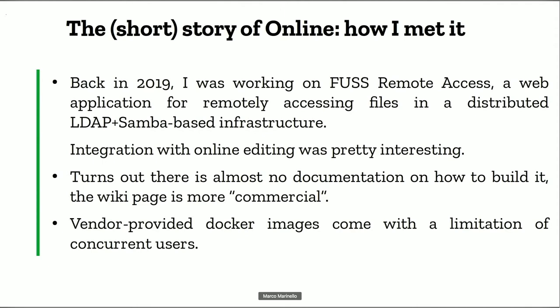The pre-built images published on Docker Hub or elsewhere came with a limit on concurrent users. After the limit was reached, the nth-plus-one user would just get a message: 'limit is over, buy a license.' I had the pleasure of talking with Michael Max yesterday about Online, and he told me this limitation was removed — which is really good news — but back in that time this problem still existed.